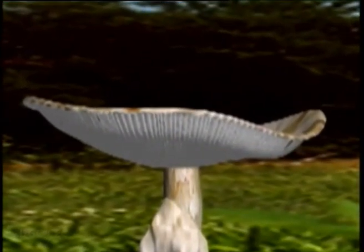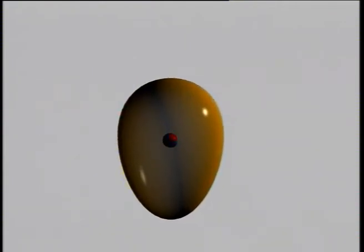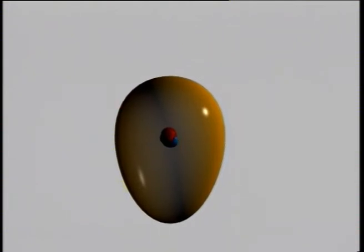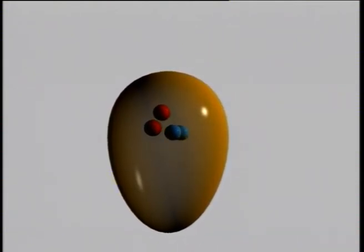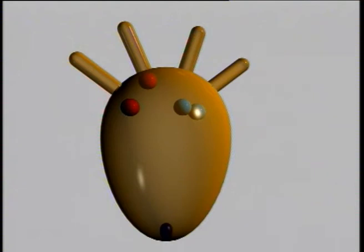The pileus of a basidiocarp is made up of gills which contain spore-producing club-shaped structures called basidia. In a young condition the basidium is known as protobasidium. Since this protobasidium is dikaryotic, it contains two haploid nuclei of opposite strains, plus and minus. Once the basidium matures, the two nuclei fuse with each other to form a diploid zygote — this fusion is called karyogamy. Karyogamy is immediately followed by meiosis, resulting in four haploid nuclei, two of plus strain and two of minus strain. Meanwhile, four small peg-like projections called sterigmata are formed at the distal end of each basidium.